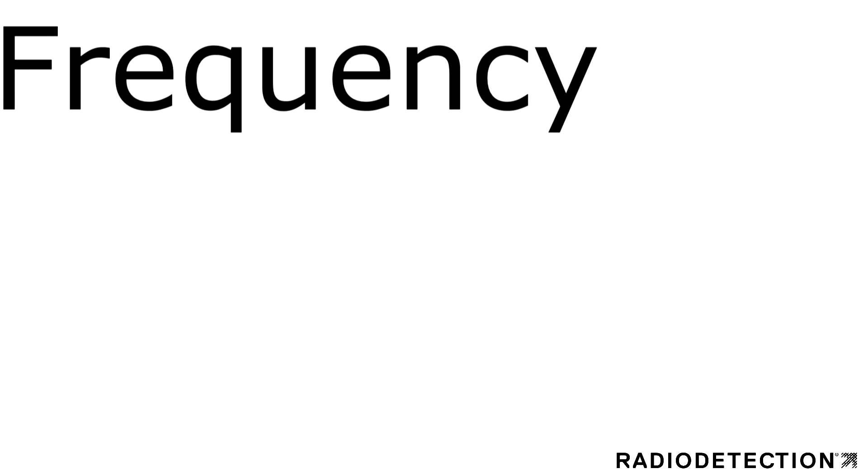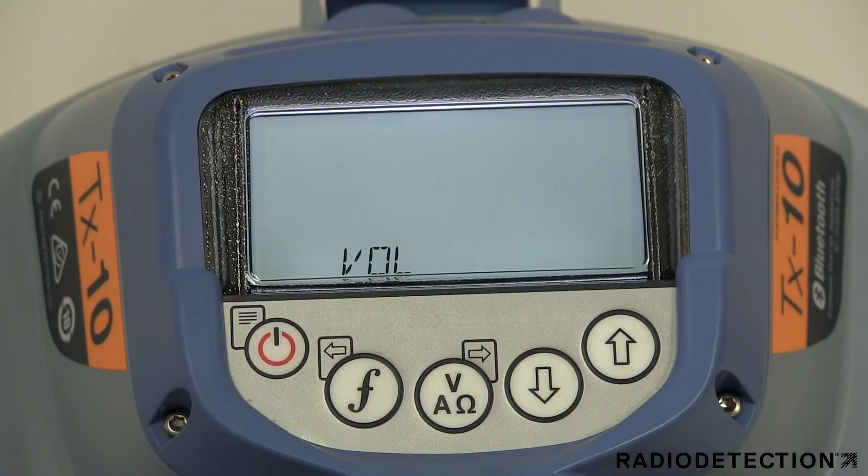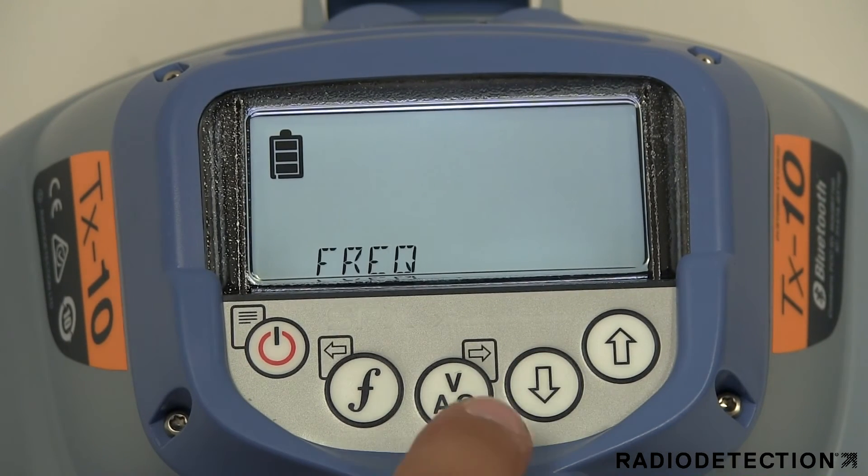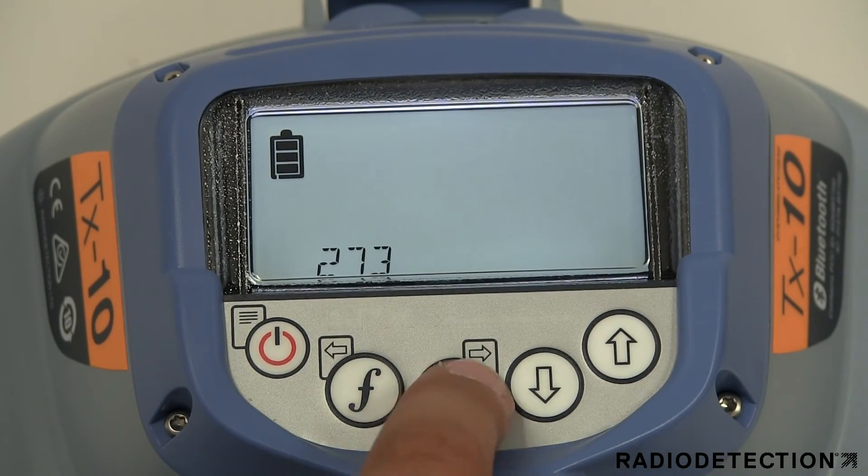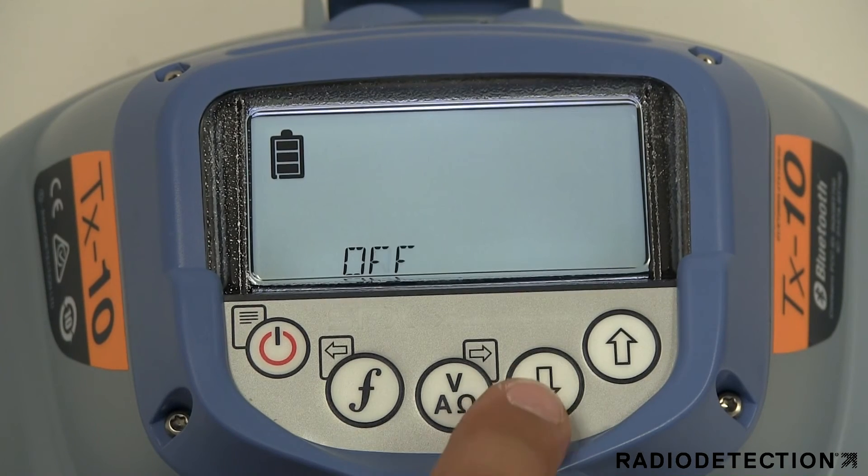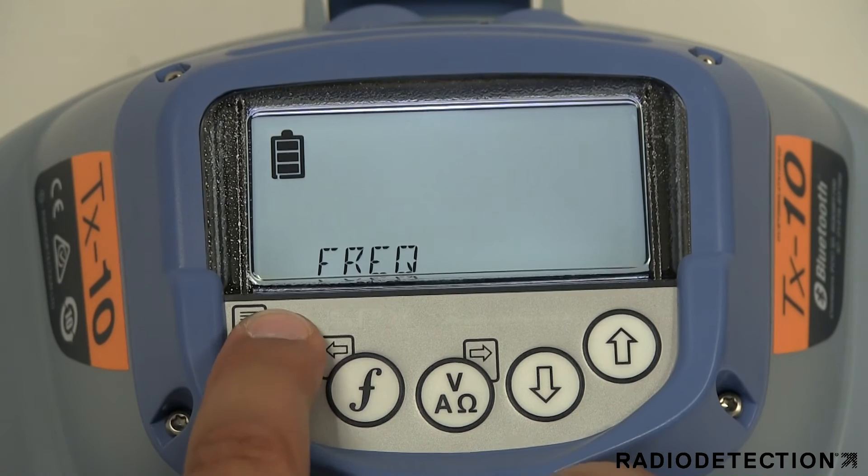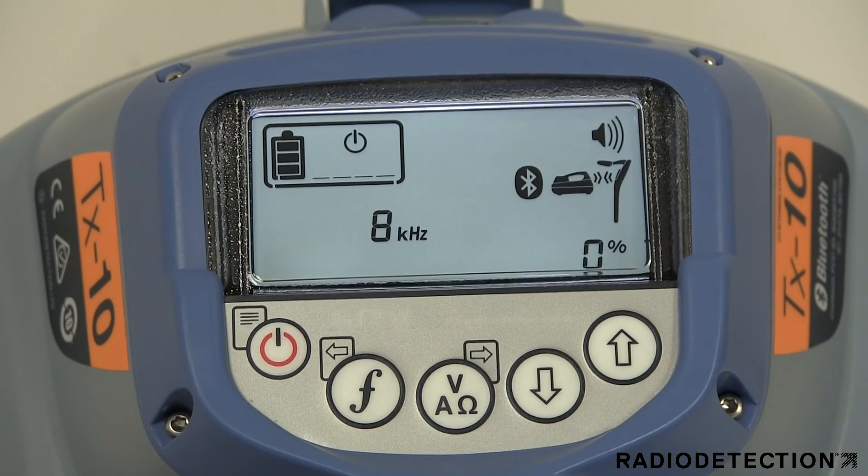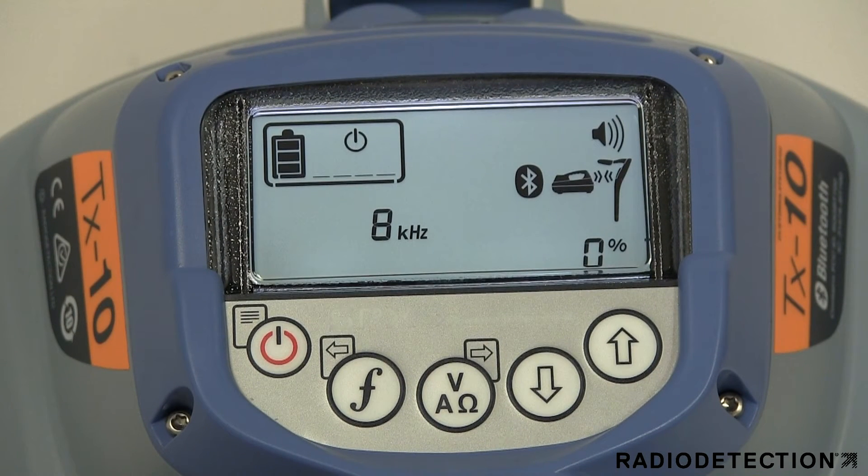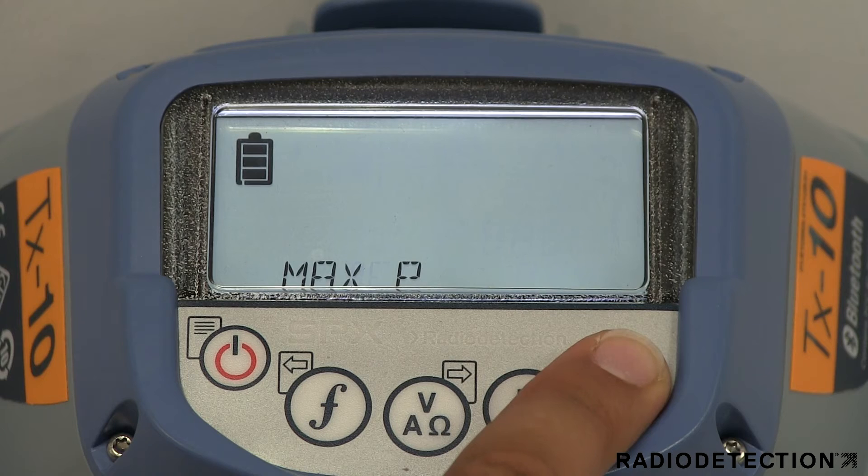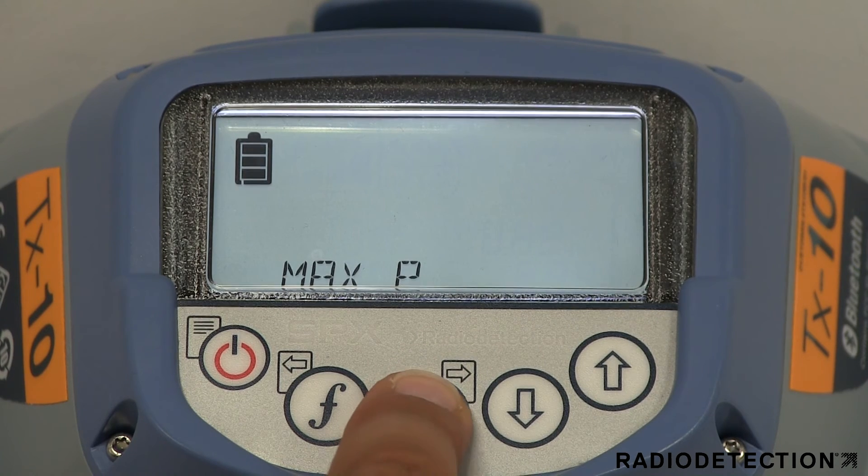The frequency option allows you to enable and disable frequencies. To disable a specific frequency, use the measure key to enter the submenu and use the F key to select on or off. Note that the frequencies you will see in this menu will reflect the frequencies available on the locator that you selected from the model menu item.